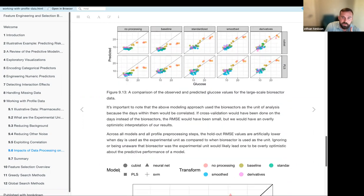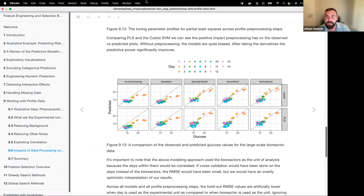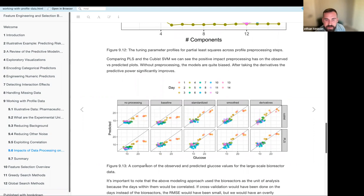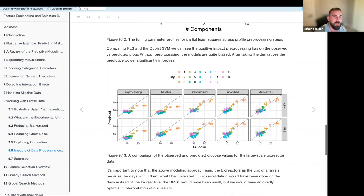Oh man, I guess there's one more. Two more. Two more plots. All right. So this plot right here is just a comparison between the observed and the predicted glucose values for the large scale data. So this is after we've trained, after we've done pre-processing, we're testing it out on the big reactors. And we see with no processing, we're still pretty far off with the earliest days being furthest from the trend line. And then all the way to the derivatives and it's comparing Cubist SVM to PLS. We have the best fit, but these first few days are still furthest from the line. So we need to be careful when interpreting those first couple days.